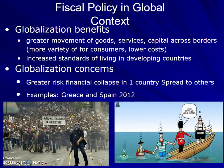When we look at fiscal policy in a global context, globalization has benefits: greater movement of goods and services, you can move capital across borders, more variety and lower costs for consumers, and an increased standard of living in a lot of developing countries. However, there are problems with globalization as well. There's greater risk — financial collapse in one country can spread very quickly to others. We saw this in Greece and Spain in 2012, with major economic problems within the euro zone. Also, while the standard of living in developing countries has increased, it's really just from pennies a day to quarters a day, not to US standards of living.